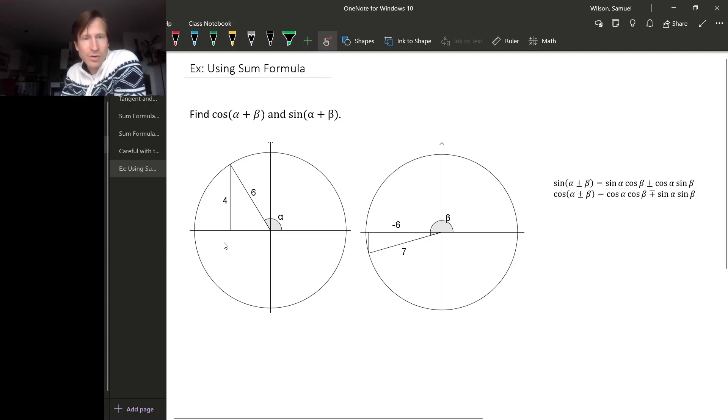Now everything we know about α and β is coming from these diagrams. So in particular, we aren't going to be able to actually—well, we could get approximations for α and β—but we aren't going to be able to find α and β exactly.